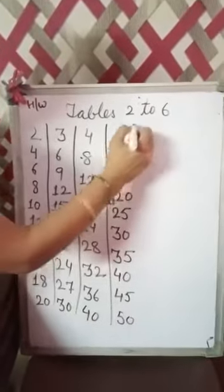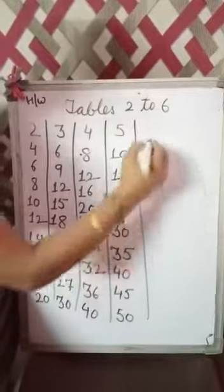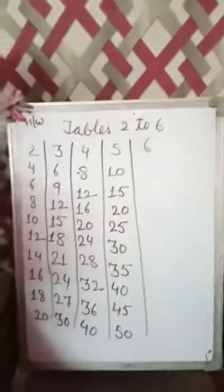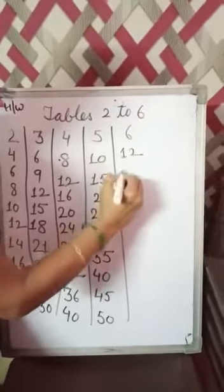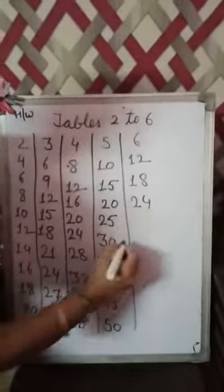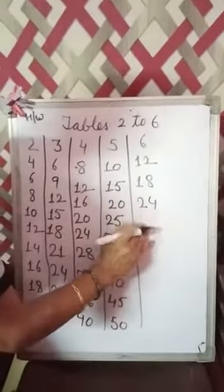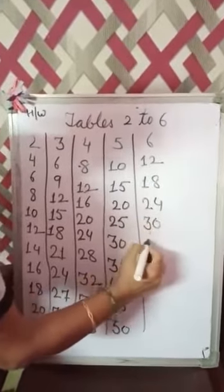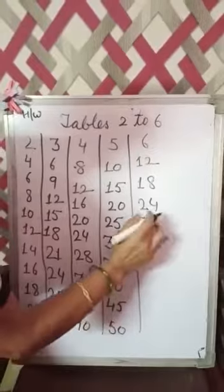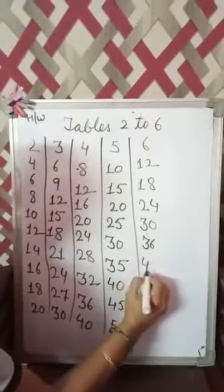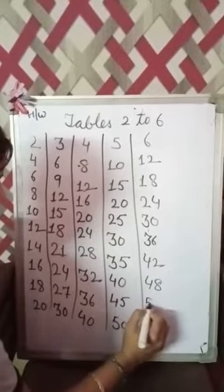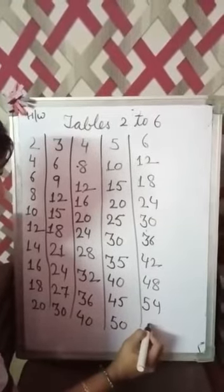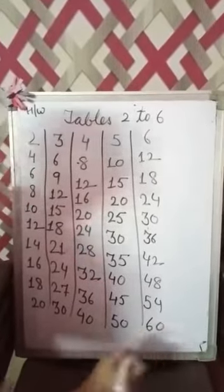Now next table. Table of 6. 6 times 1 is 6. 6 2's are 12. 6 3's are 18. 6 4's are 24. 6 5's are 30. 6 6's are 36. 6 7's are 42. 6 8's are 48. 6 9's are 54. 6 10's are 60.